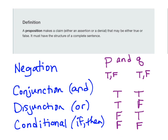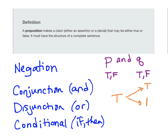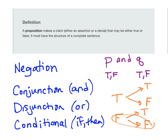A good idea to make sure you don't miss any combinations is to use the convention of true before false. Start with P as true and think about the different options for Q — Q could be true or it could be false. And then if P is false, Q could either be true or false. So we end up with four options: true-true, true-false, false-true, or false-false.